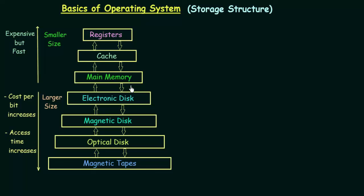Now, as we talk about main memory: main memory is your RAM or Random Access Memory. The function of main memory is that anything you load in your computer gets loaded to your main memory, and that is where it is executed. Things are stored in your secondary memory, but loaded to your main memory for execution.